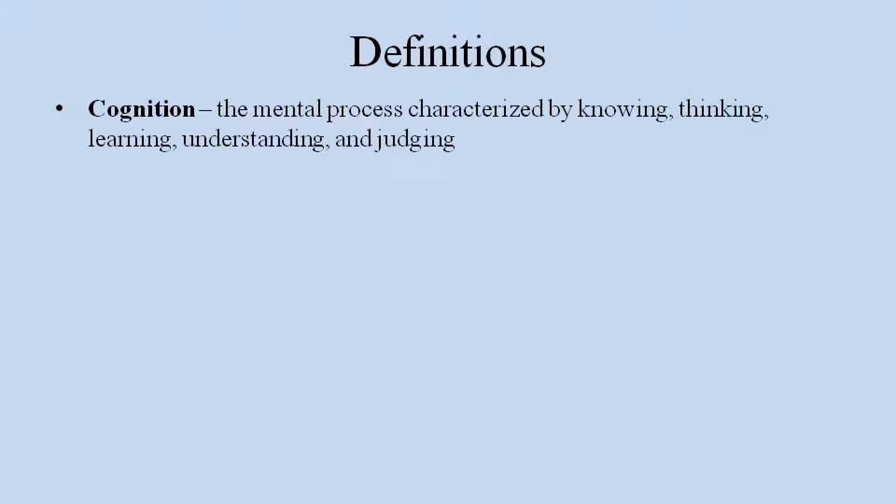Let's look at some definitions. The first definition is cognition. Cognition is the mental process characterized by knowing, thinking, learning, understanding, and judging. Cognition will be something that the nurse obviously needs to master, but also being able to look at the patient and knowing whether they are cognitively functional.